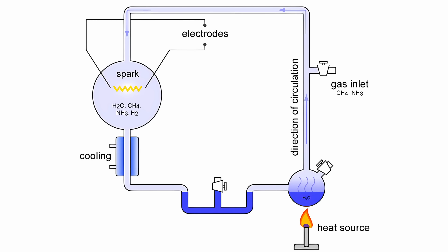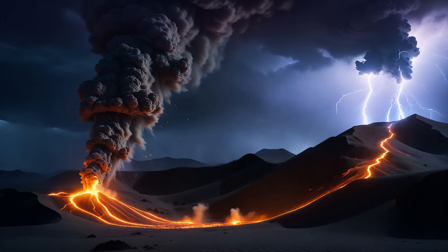Miller created a closed experiment consisting of a set of glass tubes and flasks. He filled the apparatus with a mixture of gases to mimic the presumed composition of the early Earth's atmosphere. Next, he introduced electrical discharges into the mixture to simulate lightning strikes.